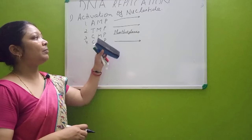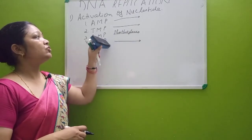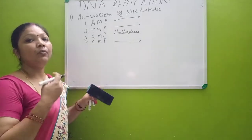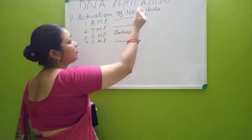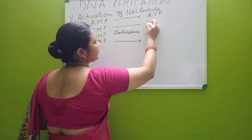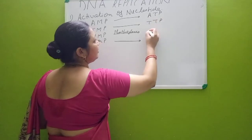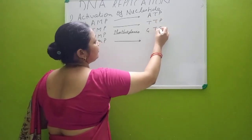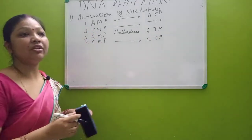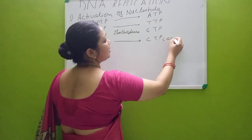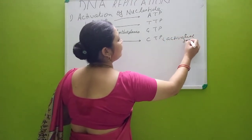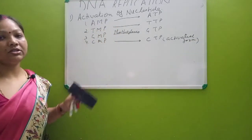The phosphorylase enzyme adds phosphate groups to these nucleotides. They change from monophosphate form into triphosphate form — that is, ATP, TTP, GTP, and CTP. These are now the activated forms of the nucleotides.